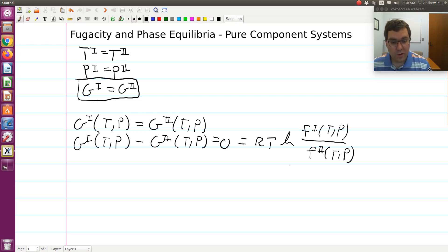So if I work with this expression, I can divide through by RT, and I would get that log F1 over F2 is equal to zero. If I were to take the exponential of this, then I have that F1 over F2 is equal to one.